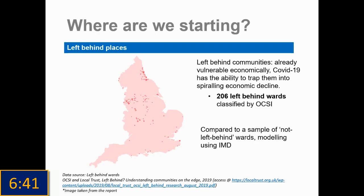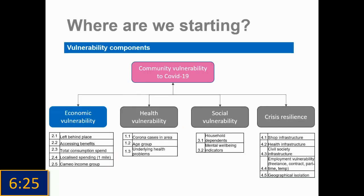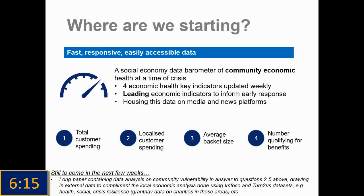We know that data right now is an immediate need, so we're trying to get started as quickly as possible and we're using OXC's 206 left-behind wards — they've already identified those that are particularly economically vulnerable. Starting with those 206, community vulnerability is broken up into a number of different components, but we'll be focusing on economic vulnerability to start. Our main aim for the first output is to create an economic health barometer with every left-behind ward and four economic health indicators, updating the data weekly to track how local economies are faring during the crisis.